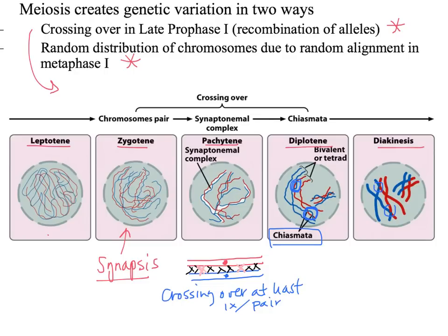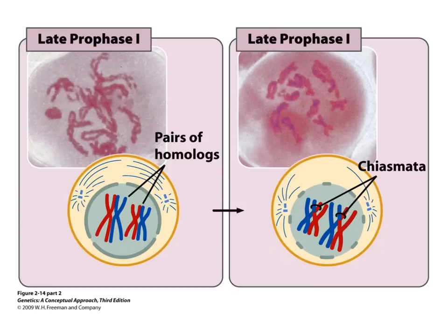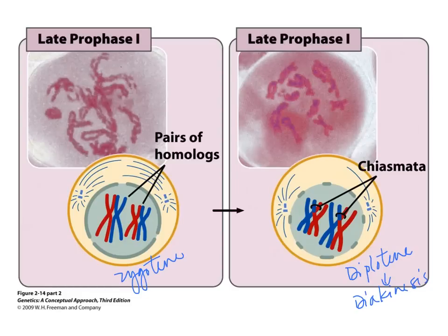Even though we have this general order — synapsis (the pairing of homologs), followed by the formation of the synaptonemal complex where crossing over will occur, followed by the visible chiasmata — crossing over truly can occur in any of these three stages: zygotene, pachytene, or diplotene. Even though it seems like it should happen only in pachytene, evidence has shown it actually occurs in these other stages on occasion. So starting with the pairing of homologs in zygotene, those chiasmata are visible by the end of diplotene and really condensed in diakinesis, from which we move into metaphase I.